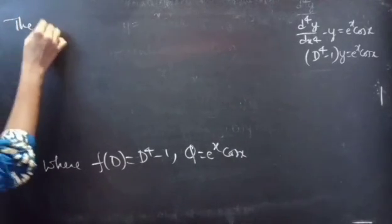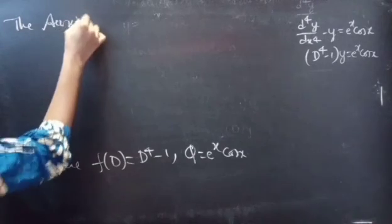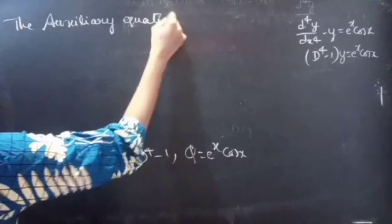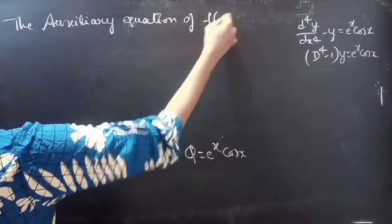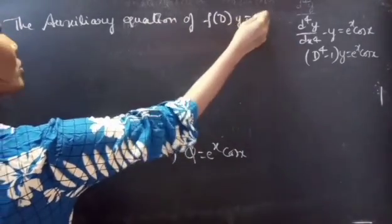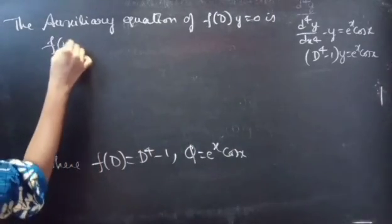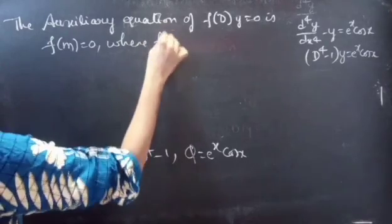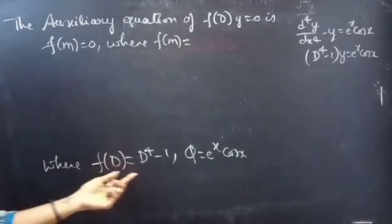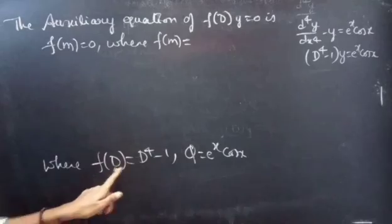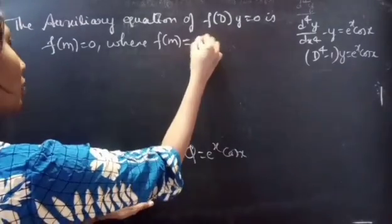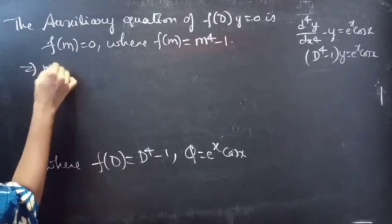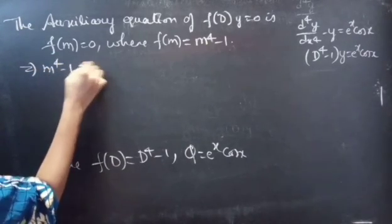The auxiliary equation of f(D)·y = 0 is f(m) = 0, where f(m) is obtained by replacing the differential operator D with m. Since f(D) = D⁴ − 1, we get f(m) = m⁴ − 1. So the auxiliary equation becomes m⁴ − 1 = 0.